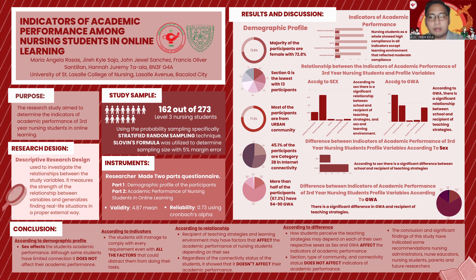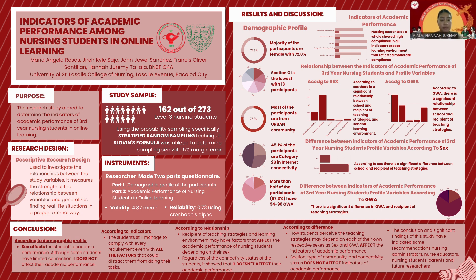For the relationship between the indicators of academic performance and profile variables: according to sex, there is a significant relationship between school and recipient of teaching strategies, and between sex and learning environment. Gender and other factors have a direct effect on learning performance. According to GWA, there is a significant relationship between school and recipient of teaching strategies. Regarding differences, according to sex there is a significant difference in recipient of teaching strategies, and according to GWA there is a significant difference between GWA and recipient of teaching strategies. GWA was used to describe the average of all subject final ratings for the school year 2021 to 2022 first semester.